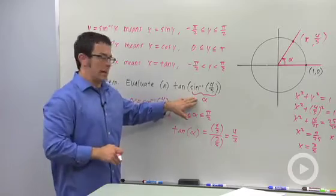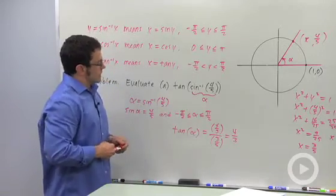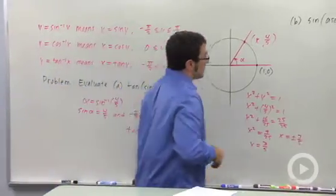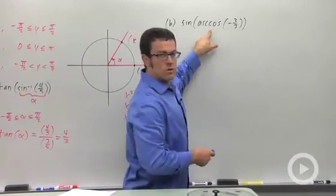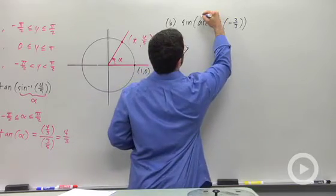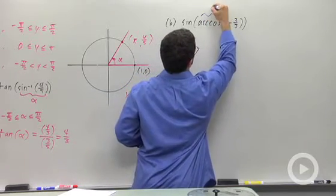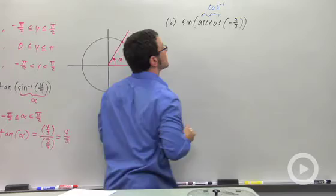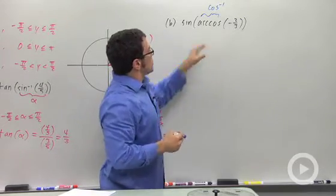So always make a substitution like this. Let's see another example. Sine of arc cosine of negative 2 thirds. Remember that arc cosine is the same as inverse cosine.